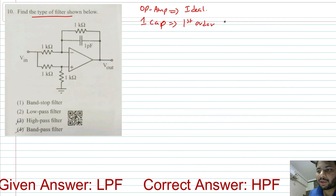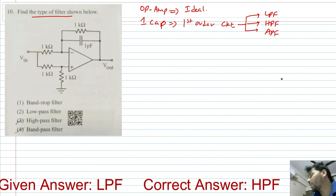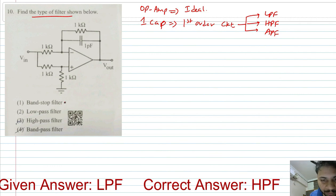The given circuit is a first-order circuit, and any first-order circuit can be low-pass, high-pass, or all-pass, but it cannot be band-pass or band-stop. So from the options, we can directly rule out band-stop and band-pass.